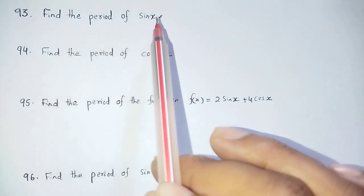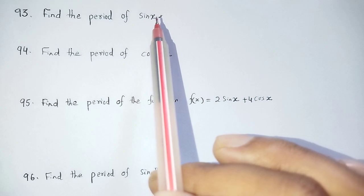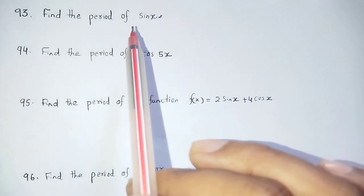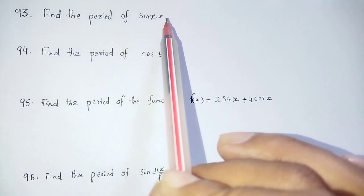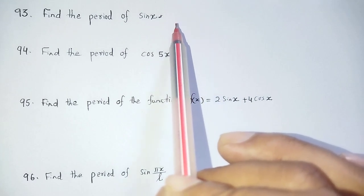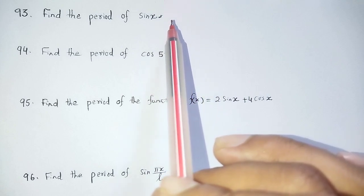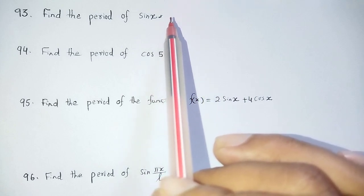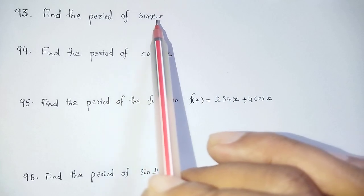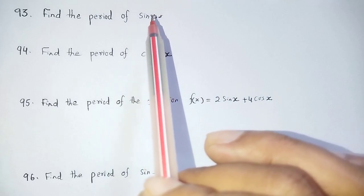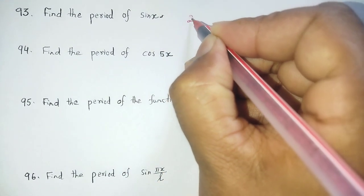Find the period of sinx, cosx, tanx — trigonometric functions. How do you calculate the period? The value of sinx and cosx: one period is 2π. You are going to calculate both by 2π.